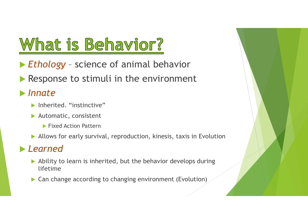We're going to talk about something called a fixed action pattern, which is a series of events that usually occur no matter what. This allows for early survival of babies, allows for reproduction, and other survival things like kinesis and taxis. These are kind of automatic things that will happen to keep the organism alive.